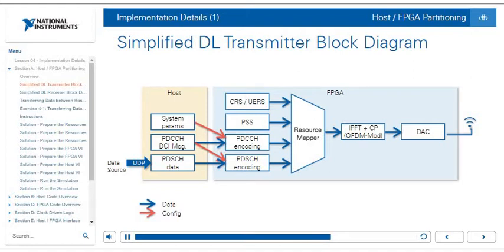In addition, the CRS, UERS, and PSS are all first created and implemented on the FPGA, then combined in the resource mapper on the FPGA. Finally, we go through the OFDM modulation, including the IFFT and cyclic prefix addition, and then to our digital-to-analog converter, which leads to the RF.